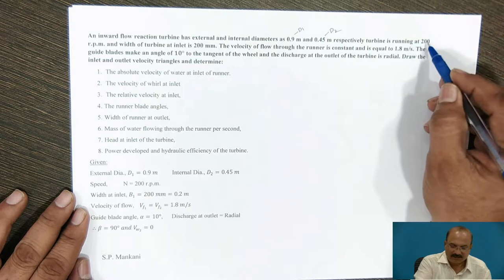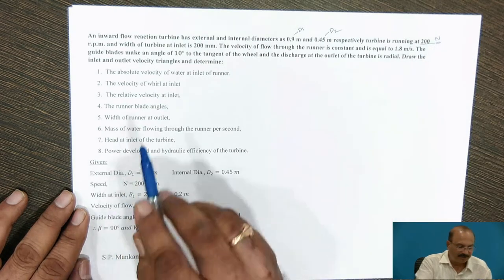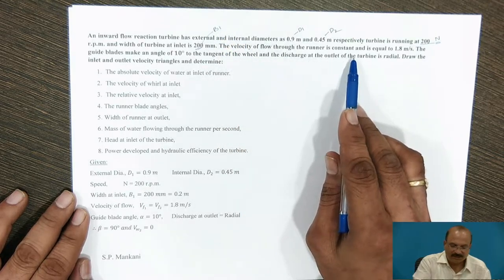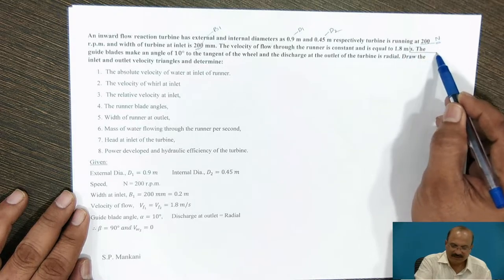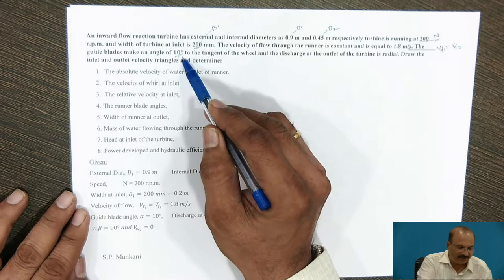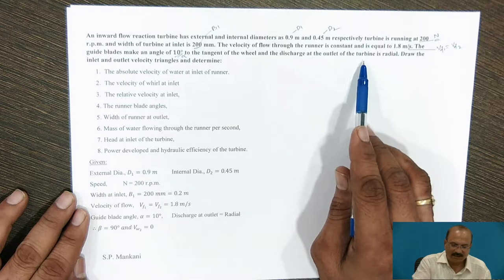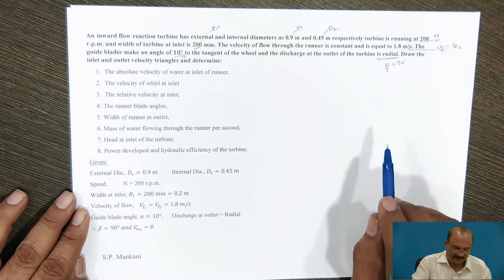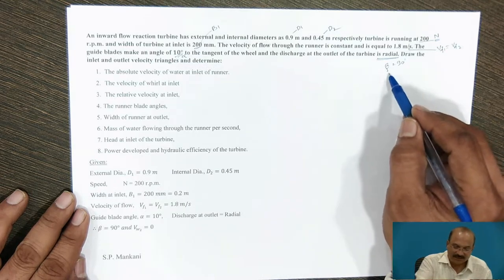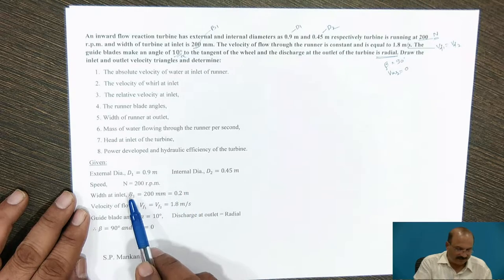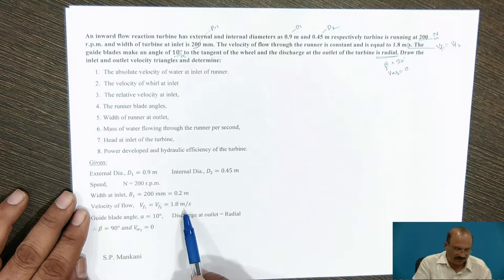The given conditions are: D1 = 0.9 m, D2 = 0.45 m, N = 200 rpm, B1 = 200 mm (width at inlet), Vf1 = Vf2 = 1.8 m/s (velocity of flow is constant), alpha = 10 degrees (guide blade angle), and the discharge at outlet is radial meaning beta = 90 degrees, so Vw2 = 0.